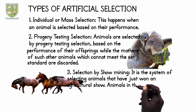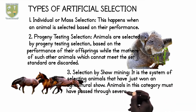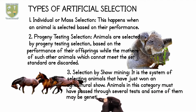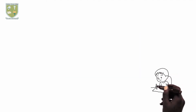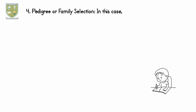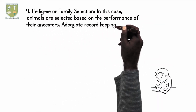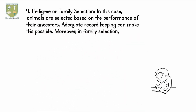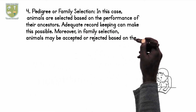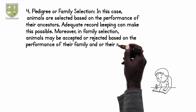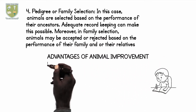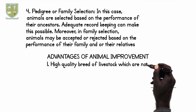3. Selection by Showing: It is the system of selecting animals that have just won an agricultural show. Animals in this category must have passed through several tests and some of them may be genetic. 4. Pedigree or Family Selection: In this case, animals are selected based on the performance of their ancestors. Adequate record keeping can make this possible. Moreover, in family selection, animals may be accepted or rejected based on the performance of their family and or their relatives.